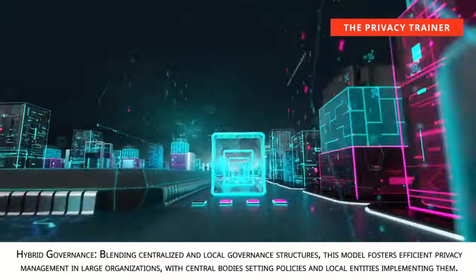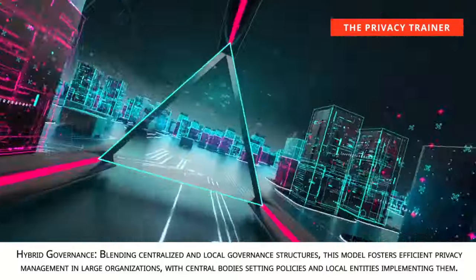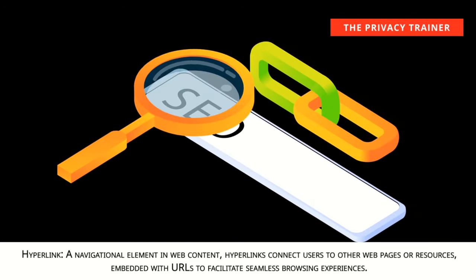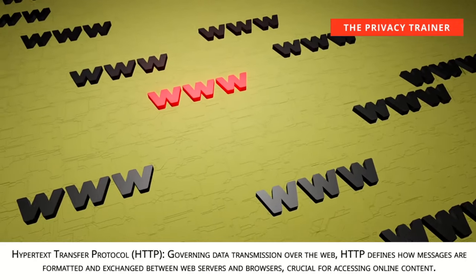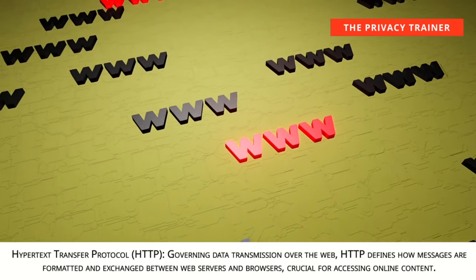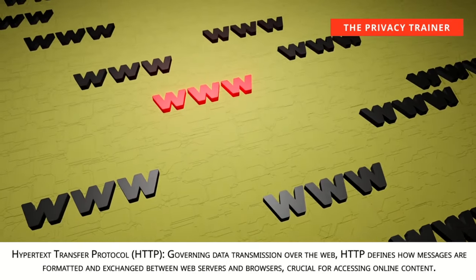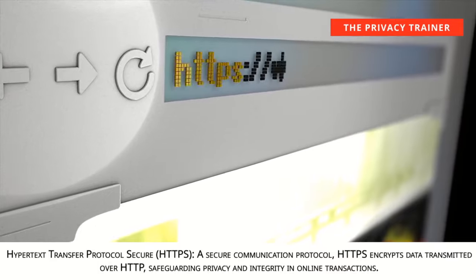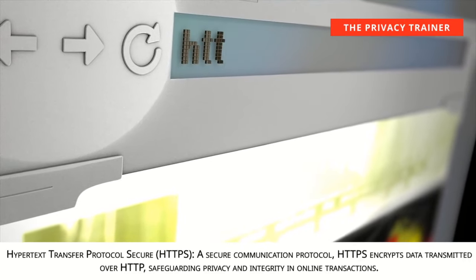Hybrid governance. Blending centralized and local governance structures, this model fosters efficient privacy management in large organizations, with central bodies setting policies and local entities implementing them. Hyperlink. A navigational element in web content, hyperlinks connect users to other web pages or resources, embedded with URLs to facilitate seamless browsing experiences. Hypertext Transfer Protocol, HTTP. Governing data transmission over the web, HTTP defines how messages are formatted and exchanged between web servers and browsers, crucial for accessing online content. HTTPS, Hypertext Transfer Protocol Secure. A secure communication protocol that encrypts data transmitted over HTTP, safeguarding privacy and integrity in online transactions.